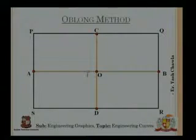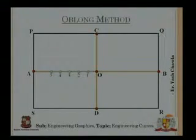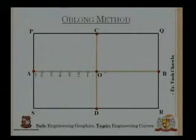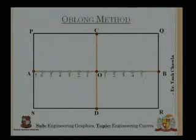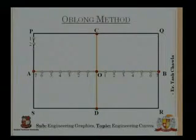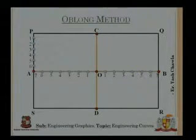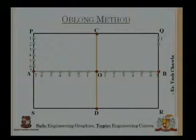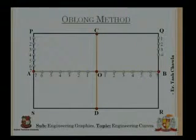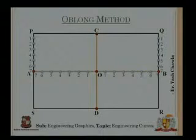I will divide OA into seven equal parts: one, two, three, four, five, six, and seven. Then I divide OB into seven equal parts: one through seven. Then I divide PA into seven equal parts: one through seven, as you can see them appearing on your screen. Then I divide QB into seven equal parts: one, two, three, four, five, six, and seven.